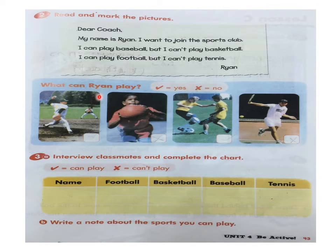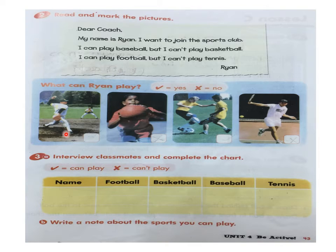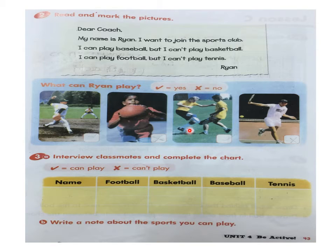Now, what can Ryan play? Question word 'what', then can, then the subject, then the verb. You're going to put a tick if it's yes or X if it's no. Can Ryan play baseball? Yes — tick. Can Ryan play basketball? No, he said he can't play basketball. Can Ryan play football? Yes — tick. Can Ryan play tennis? No — X.